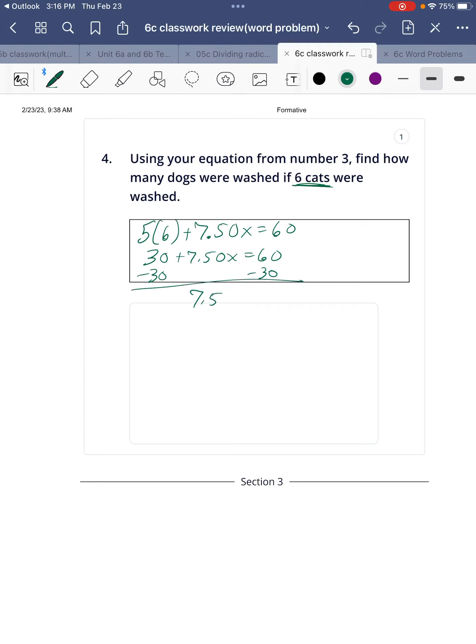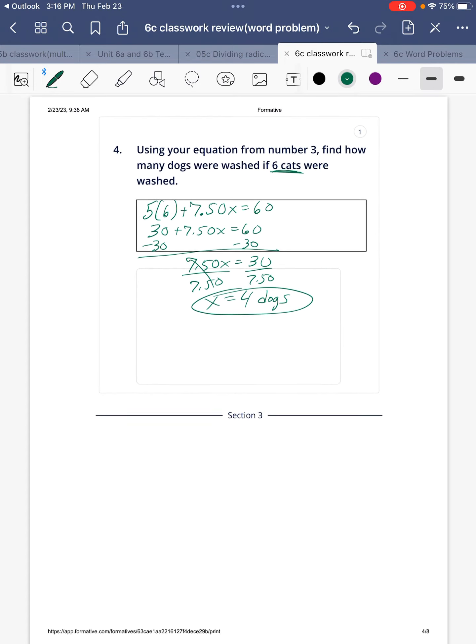Minus 30. Divide by $7.50. And we're going to get x equals 4. And that would be 4 dogs.